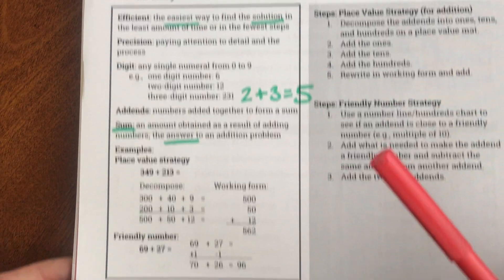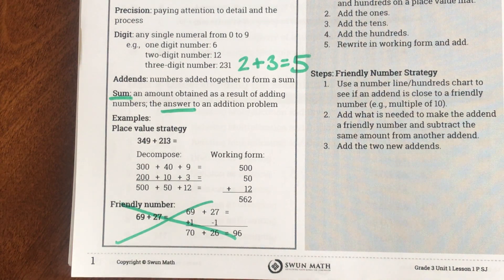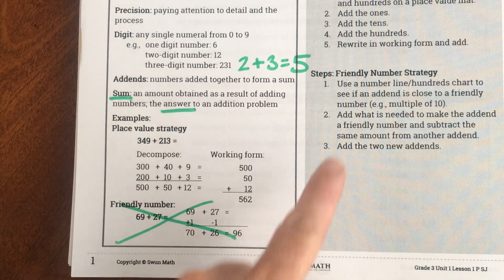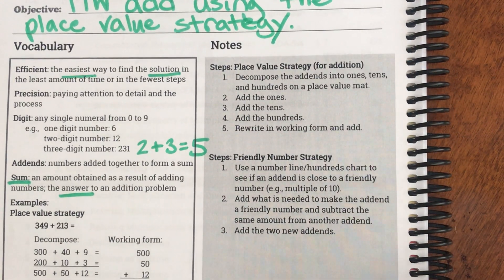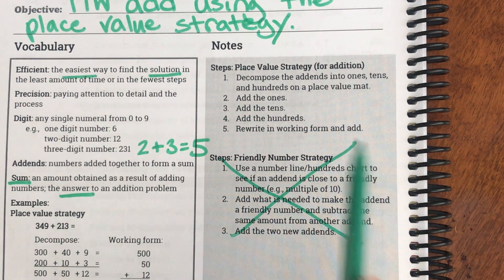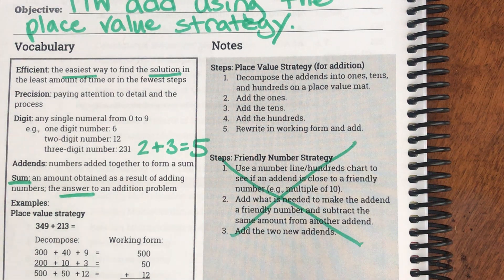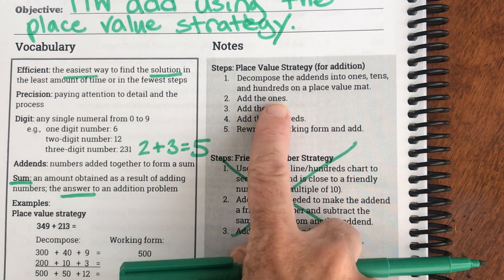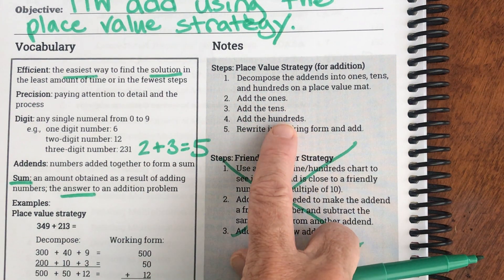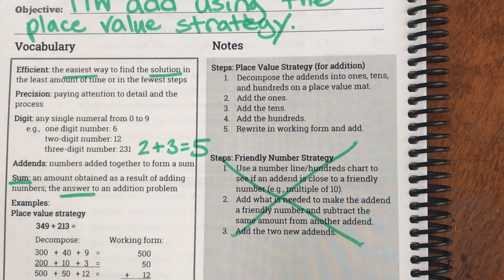And then they give us two different strategies here. We're going to do ours a little different though and we're not going to use the friendly number strategy. That's actually a really good strategy, I'm just not going to teach it in this video. Okay, so let's look at our steps. So we're not using the friendly number strategy so I'm going to cross that off. But we are using our place value strategy. So it says we're going to decompose, which means break apart, the addends into ones, tens, and hundreds on a place value map. Then I'm going to add the ones, add the tens, the hundreds, and then I'm going to rewrite in working form and add.